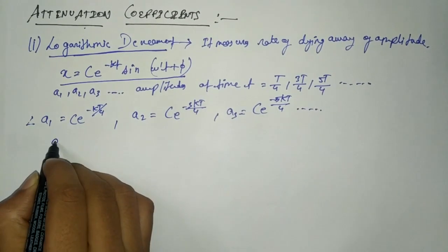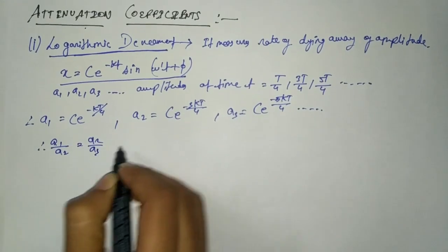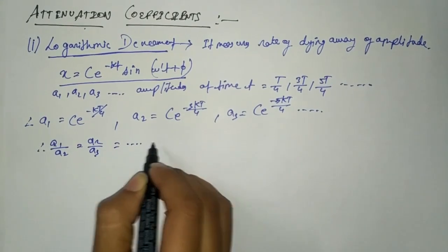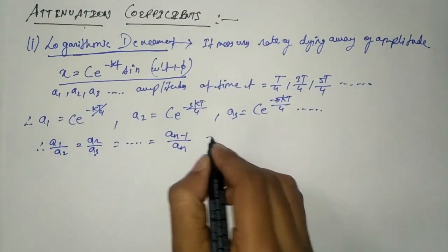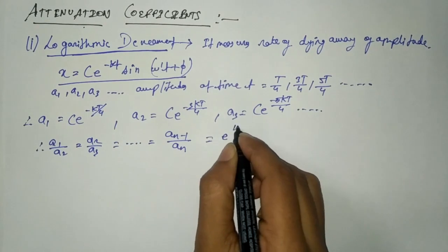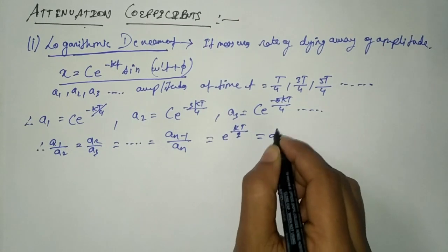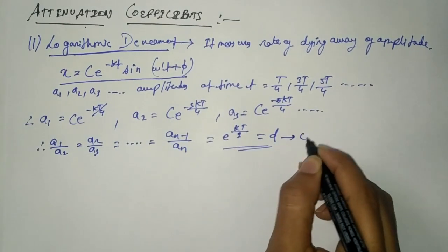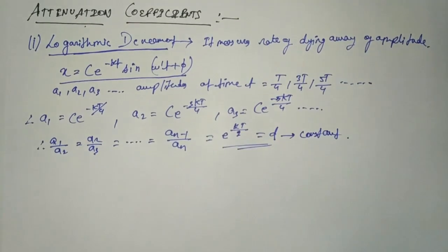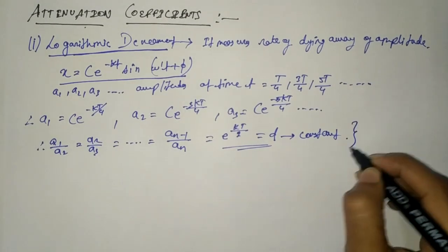Therefore, a1 by a2 equals a2 by a3. In general, a(n-1) by an equals e to the power kT by 2. Let this be d — it is a constant term, as we can see from the calculations. This term is known as the logarithmic decrement.